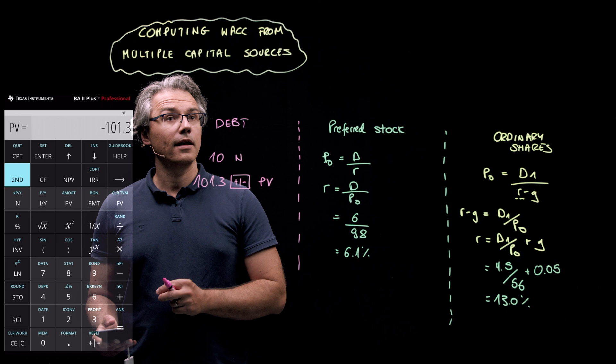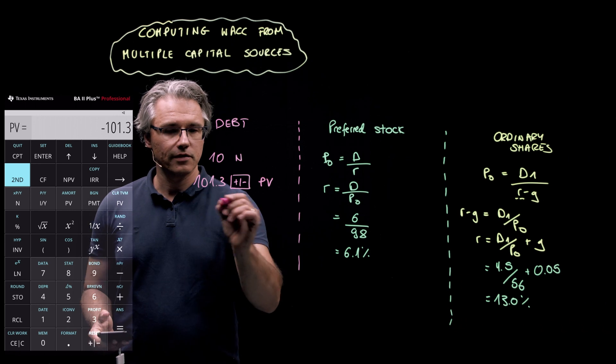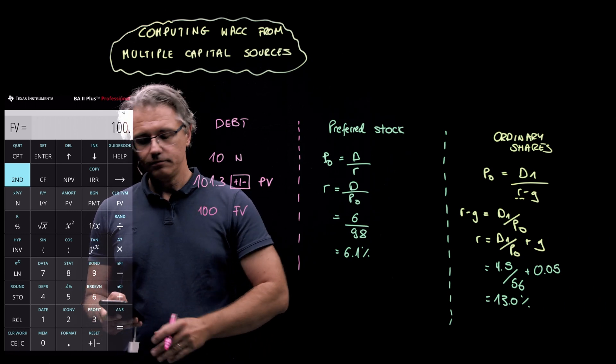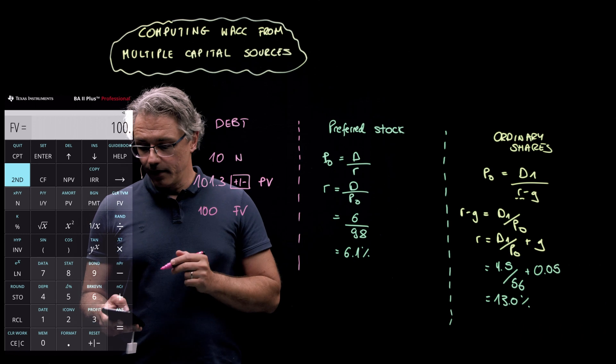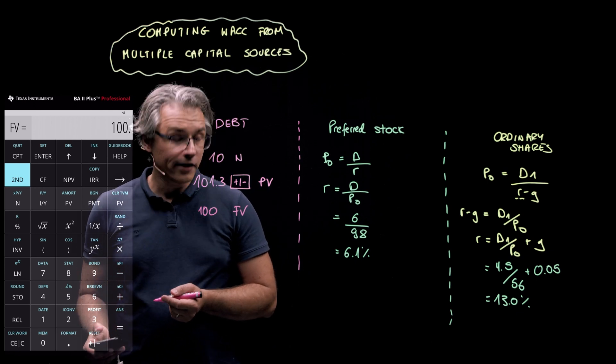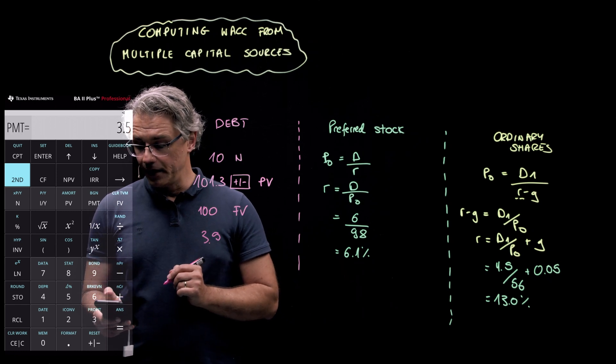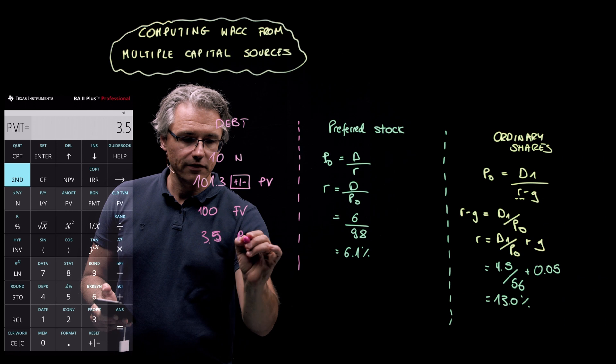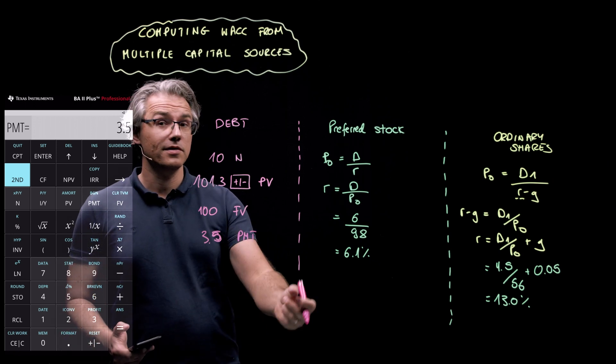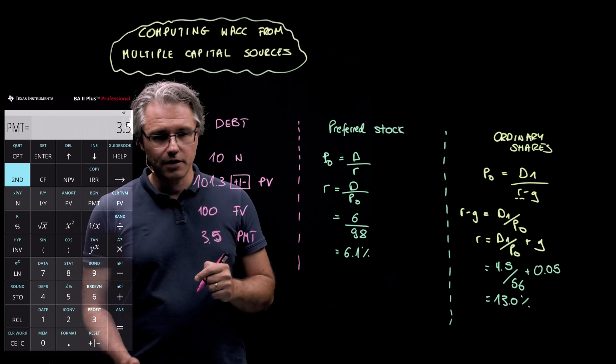The next thing I can tell the calculator is that the future value, meaning when the bonds mature in 10 years time, is going to be 100. So, 100 followed by FV. That's the third input. And I also want to tell the calculator what the coupon is. Well, the coupon here was 3.5%. So, 3.5 followed by PMT. And please note that this 3.5 as well as the 100, both of these inputs were positive, seeing as from an investor's point of view, this is something that investors receive from the bond for which they paid a certain amount.